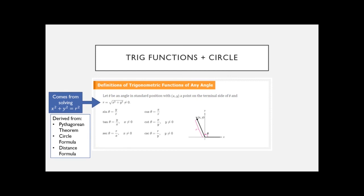We're still going to be looking at the idea of a triangle, but instead of thinking of it as hypotenuse, adjacent, and opposite, it's now going to be in terms of x, y, and radius. And you can get the six trig formulas using the same ideas as SOHCAHTOA — it's just different labels.